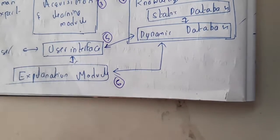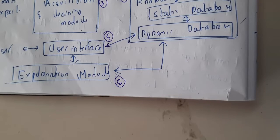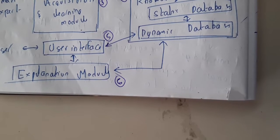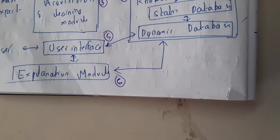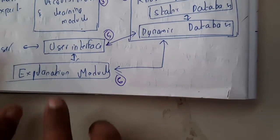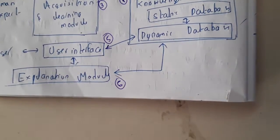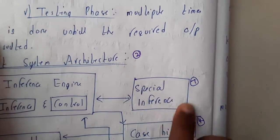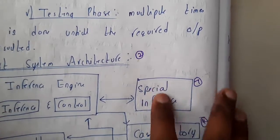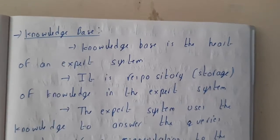The explanation module is next. If a problem is solved without any explanation, you may have doubt about how to understand it. The explanation module explains how the expert system got a particular conclusion, providing step-by-step reasoning. The final component is the special interface, which we'll discuss shortly — it's really simple.